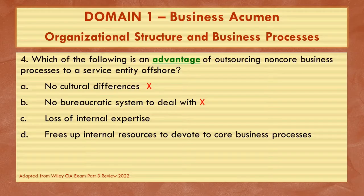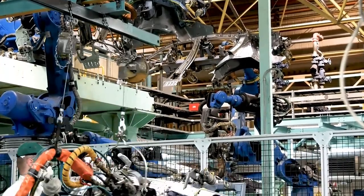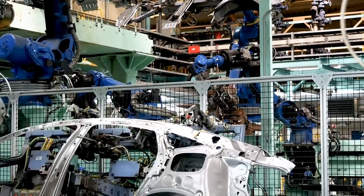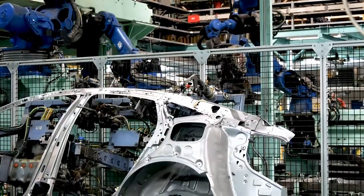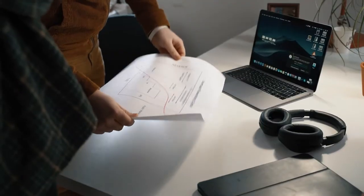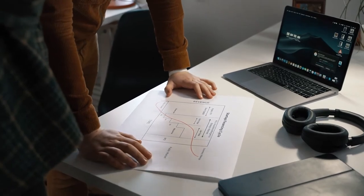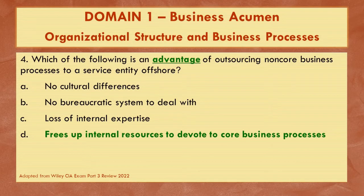Loss of internal expertise could be a disadvantage or risk of outsourcing because employees of the user organization are no longer experts in that non-core business process being outsourced. Looking at D, by freeing up internal resources, the user organization can devote more time to core processes that might lead to a more competitive advantage — that is the answer. Since non-core processes are outsourced, internal employees can focus on the core of their operations.